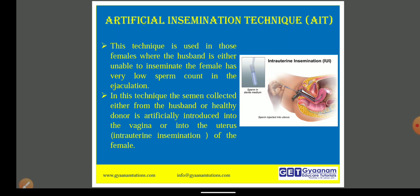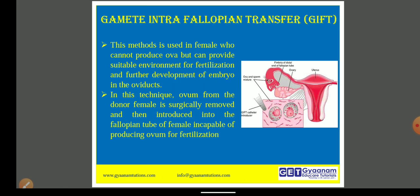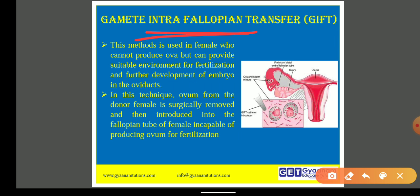The sperms can be taken from the donor body or from the husband's body. Next is gamete intra-fallopian transfer. In this case, as we have seen previously, we can take sperm from a male donor. The same way, this disorder is basically in the female body — the female is unable to produce ova.